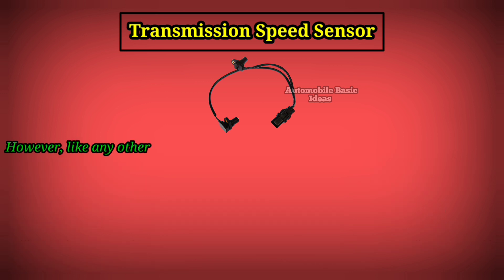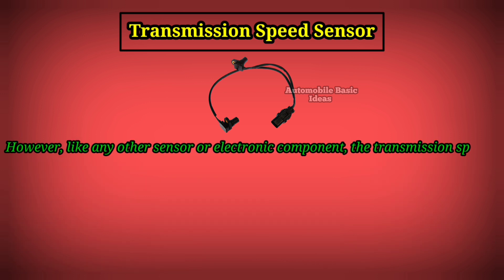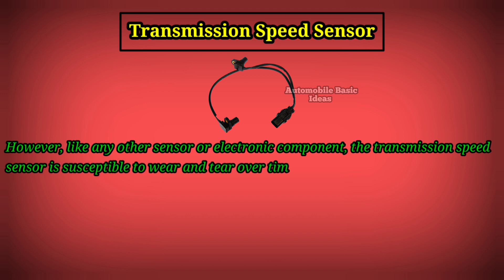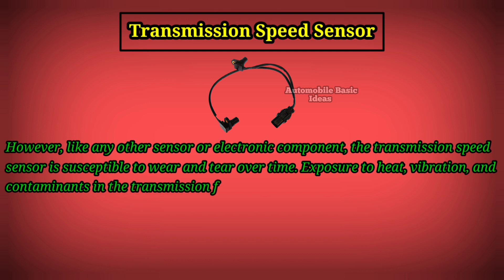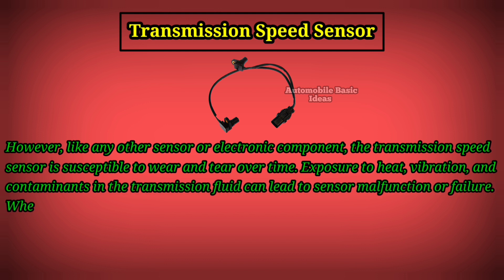However, like any other sensor or electronic component, the transmission speed sensor is susceptible to wear and tear over time. Exposure to heat, vibration, and contaminants in the transmission fluid can lead to sensor malfunction or failure.